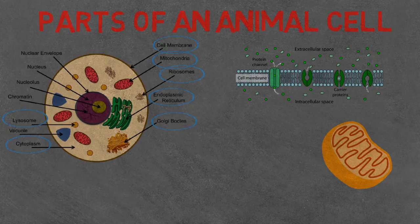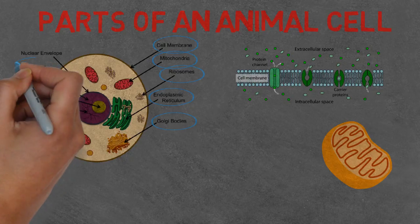Next, we've got lysosomes. This is an example of what the Golgi apparatus makes. Its main function is to digest unwanted or damaged cell parts.